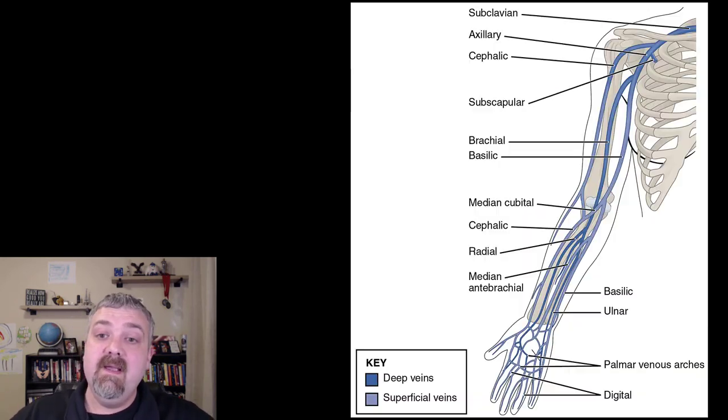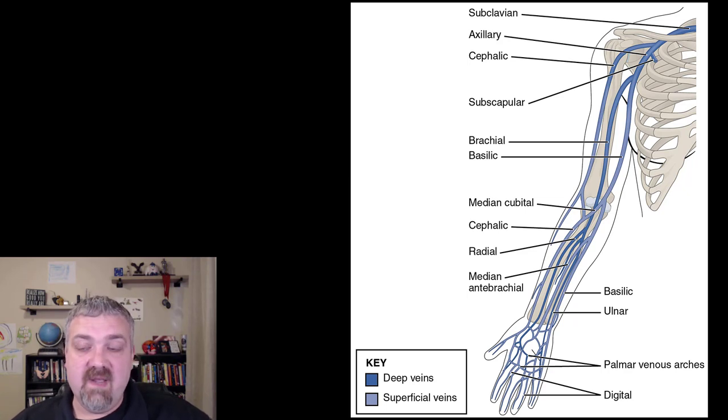Alright, this is the most important image when it comes to veins. This is where students struggle the most. Understanding the veins of the arm to me is the most complicated. So we'll start there at the top. You see the subclavian vein again. I've mentioned it several times. It's the part of this vein that runs underneath the clavicle. The axillary vein is the part that runs in the axilla region.